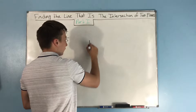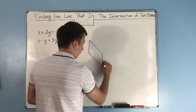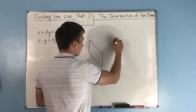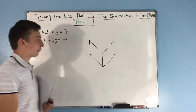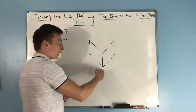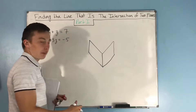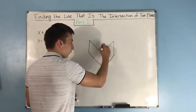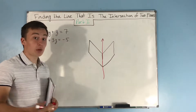Say we have two planes — one plane that goes down this way and one plane that goes up this way, kind of symmetrical. Where they intersect is going to be a line. These planes are going to be infinite, so this line just goes through here. This line in red is what we're actually finding.